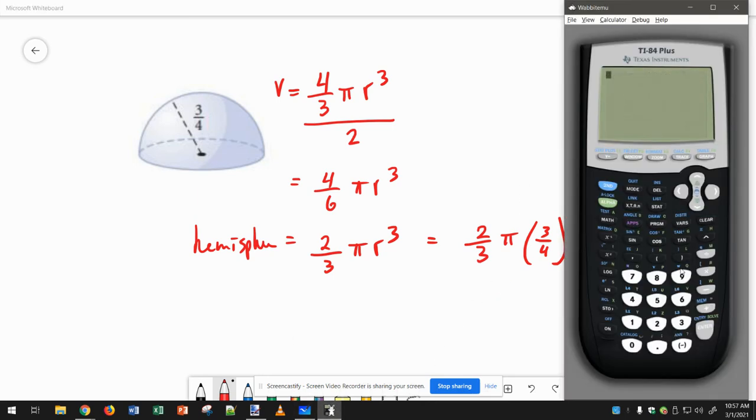But I encourage you to get a beast like this and say 2 over 3, watch how easy it is. Times π, and then times parentheses 3/4, parentheses.